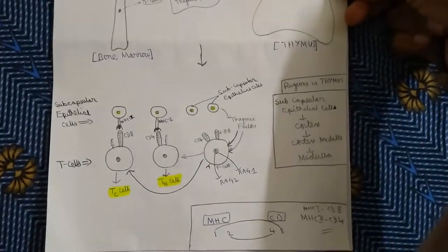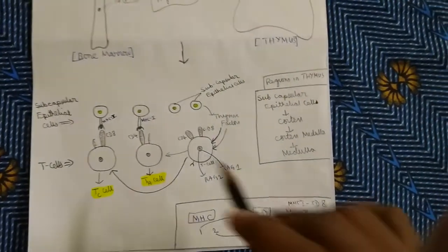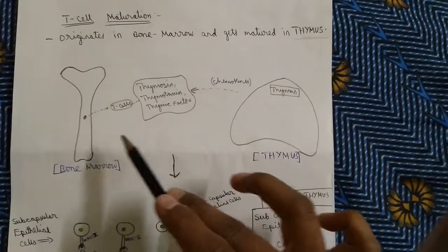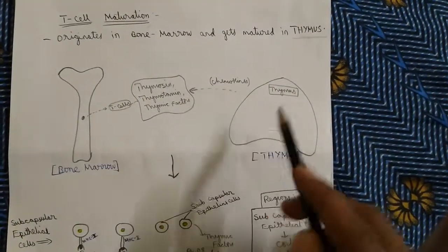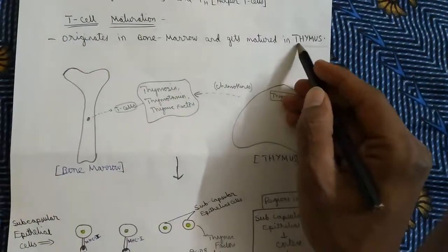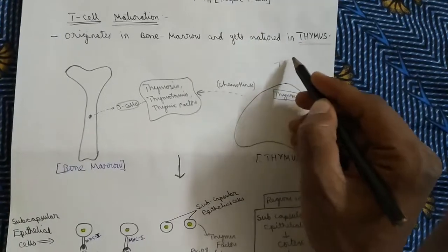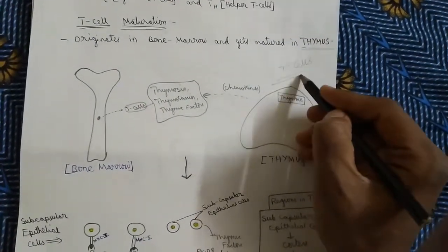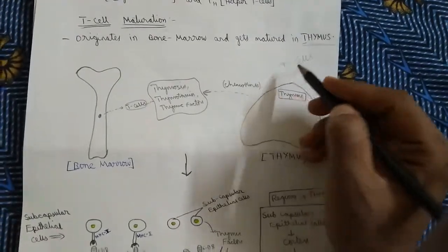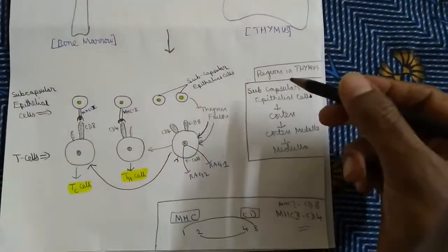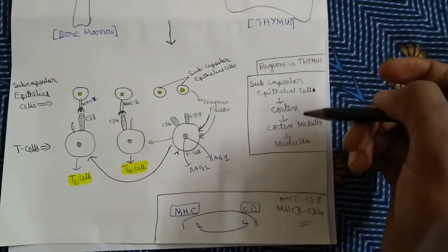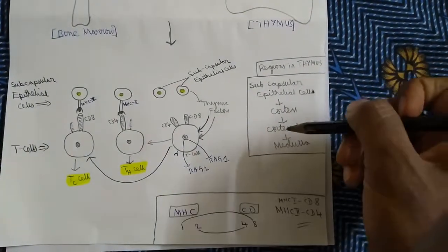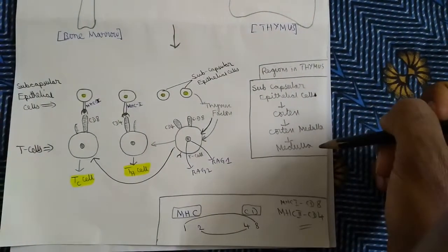Now let's see how the process of maturation takes place in the thymus. As these cells are matured in the thymus, they are referred to as T-cells — named after their maturation site. Generally, there are four regions in the thymus: the subcapsular epithelial cell region, cortex region, cortex-medulla region, and medulla region.